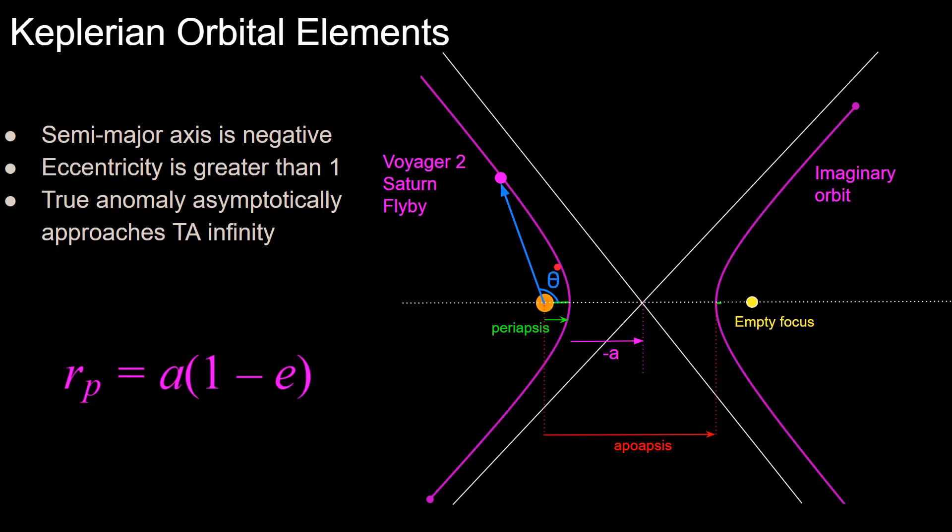But notice that true anomaly will never reach 180 degrees, since the trajectory is approaching its asymptote in this direction. So there exists a true anomaly infinity value, which I'll get to in another video, but the important thing to note is that true anomaly approaches some value and does not exceed it, due to this asymptote here. So this position will never get to 180 degrees along this abs line. That just won't happen in a hyperbolic trajectory.